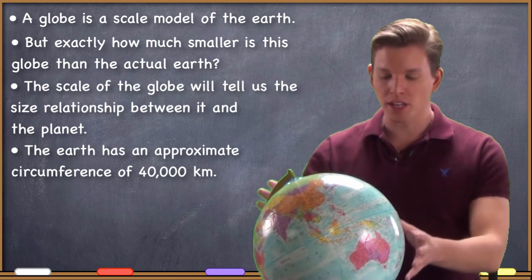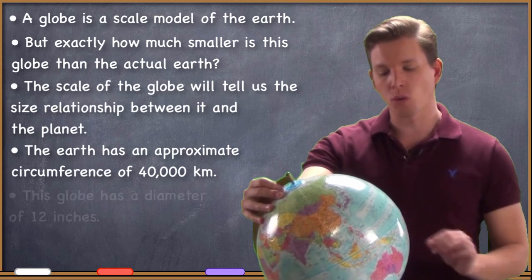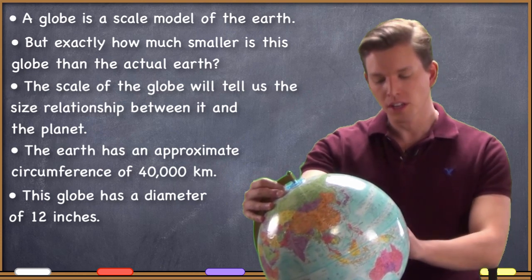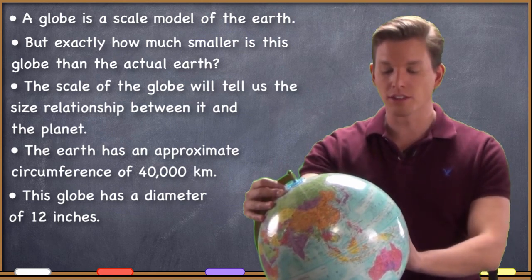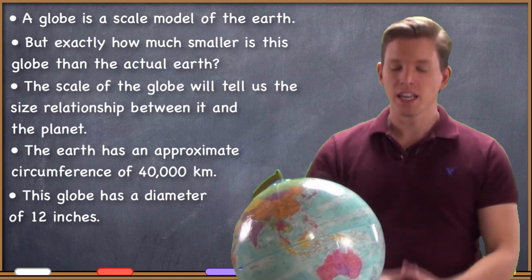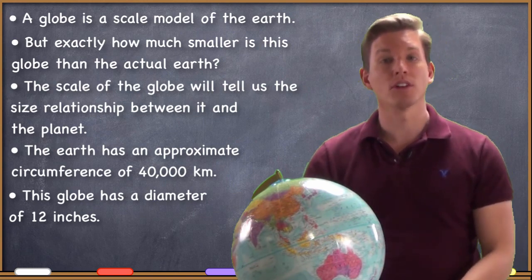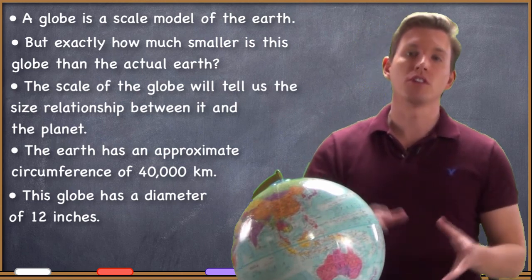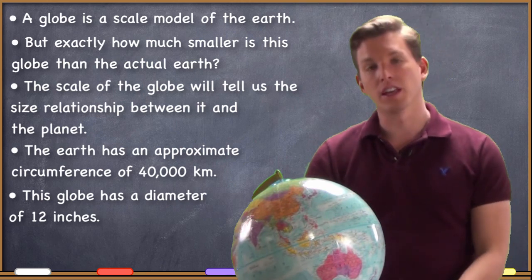This globe tells me how large it is — it says 12-inch diameter globe, so we're using inches here instead of metric measurements. I have the diameter of the globe: 12 inches. We'll need to compare the diameter of the globe to the diameter of the planet. Since we've got the globe measurement in inches, we should use the Imperial System for the Earth's diameter as well. So what's the diameter of the Earth in miles?